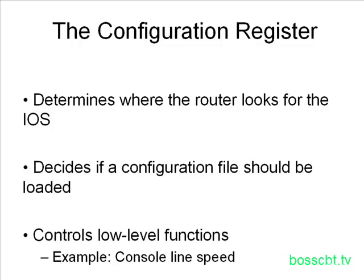Finally, the configuration register is in charge of a lot of what you call low-level functions of the router — for example, the console line speed, or perhaps some diagnostic information we can get from how the router will function. Those things are also controlled by the configuration register, so you can see this plays a vital role in bringing up a router. We're going to look at how to configure the configuration register and how to verify the current value.